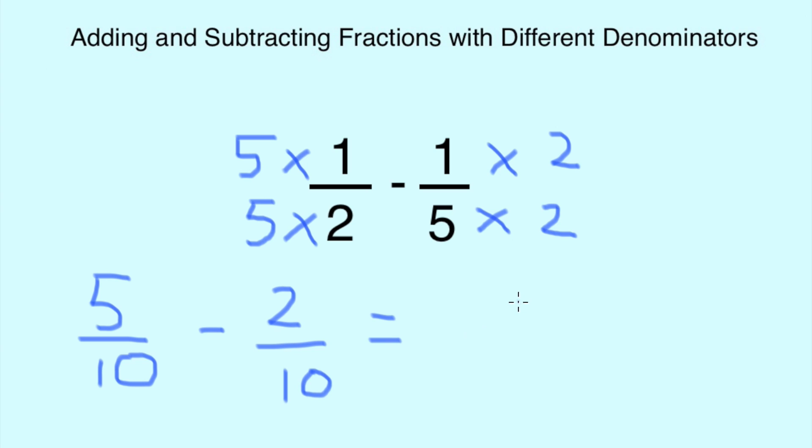We rewrite this as simply 5 minus 2 over 10,